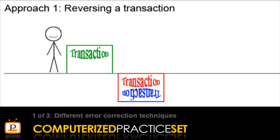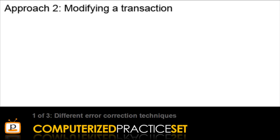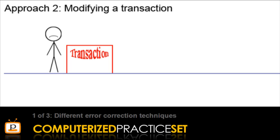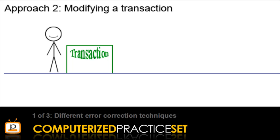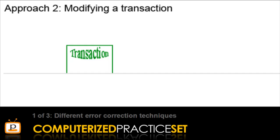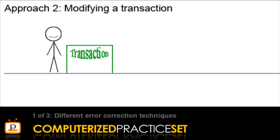Now that we've covered the first approach, let's look at the second approach: modifying the original transaction. Here is Chris and the wrong transaction again. This time, Chris is going to make changes directly to the wrong transaction in order to correct it. Once the changes are made, the transaction is now correct. Notice when modifying the original transaction, there is only ever one component — the single transaction itself — and that one transaction changes its character during the editing process.